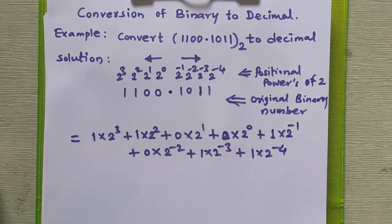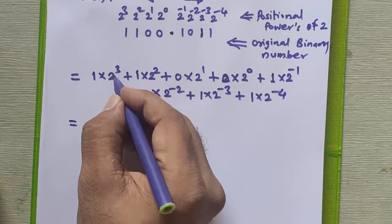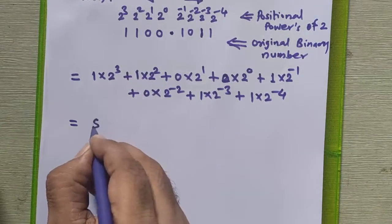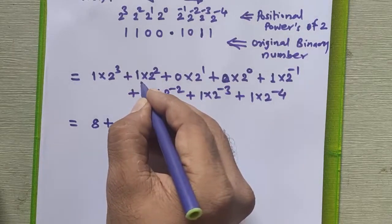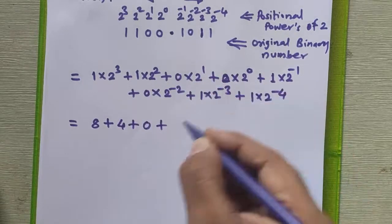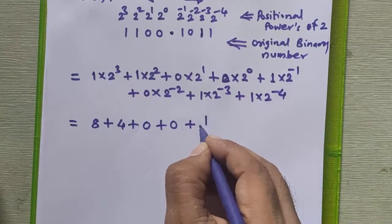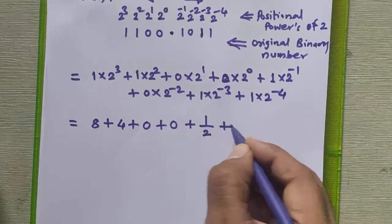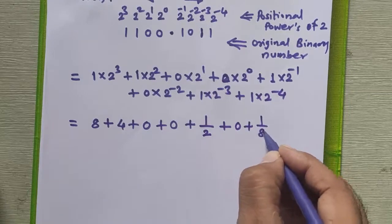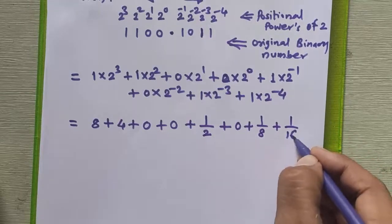Now we will solve this to get our result. 1 × 2³ = 8. 1 × 2² = 4. 0 × anything = 0. 0 × anything = 0. 1 × 2⁻¹ = 1/2 = 0.5. 0 × 2⁻² = 0. 1 × 2⁻³ = 1/8 = 0.125. 1 × 2⁻⁴ = 1/16 = 0.0625.